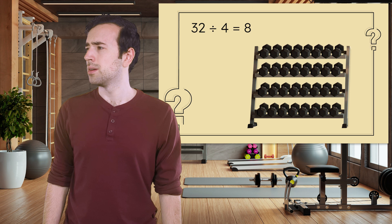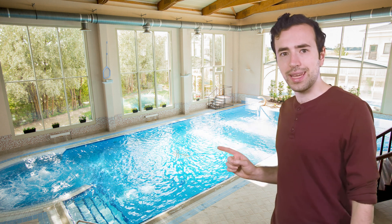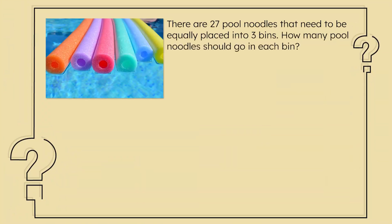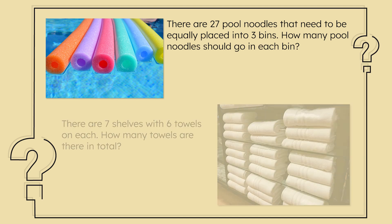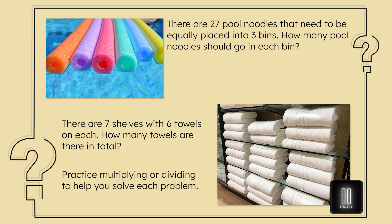Is that a splash? The professor has a pool? Hey! There's a key at the bottom of the pool, and I'm sure we're going to need it. But I didn't really bring any swim clothes or a towel. Oh, a net — perfect. Let's solve this last puzzle to unlock the net and scoop up the key. There are 27 pool noodles that need to be equally placed into three bins — how many pool noodles should go in each bin? And there are seven shelves with six towels on each — how many towels are there in total? Let's practice our multiplication and division skills. Pause here to solve each problem in your guided notes.